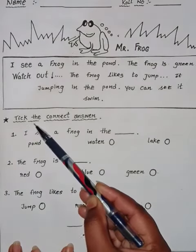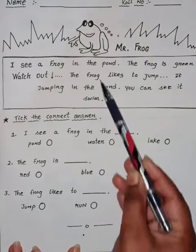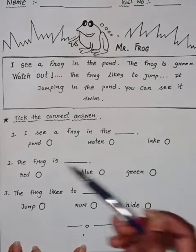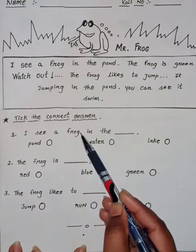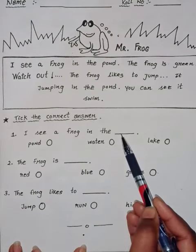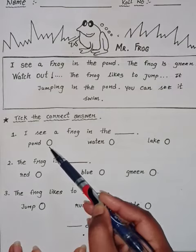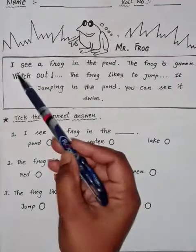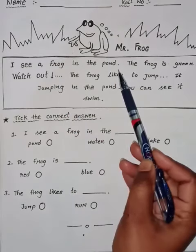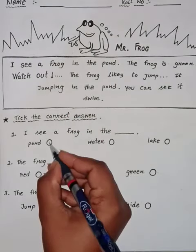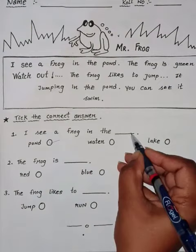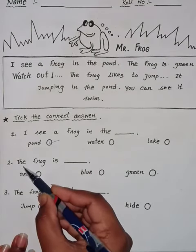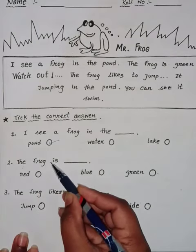Next, tick the correct answer. ऊपर से देखकर दिए गए options में टिक करना है। First question: I see a frog in the dash — options हैं pond, water, and lake। I see a frog in the pond, so pond पर टिक करेंगे और यहाँ लिख भी लेंगे।